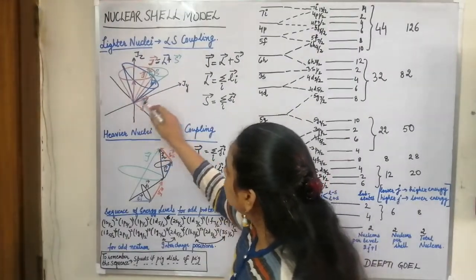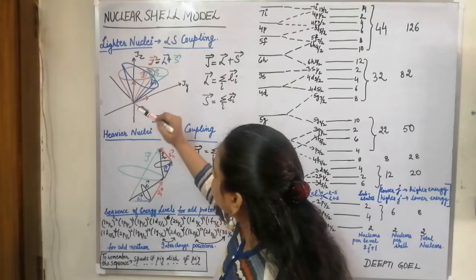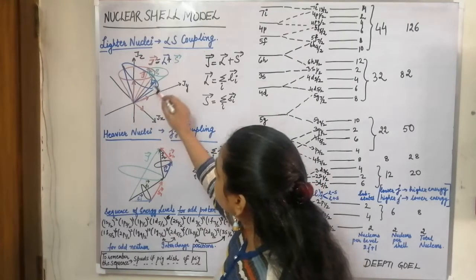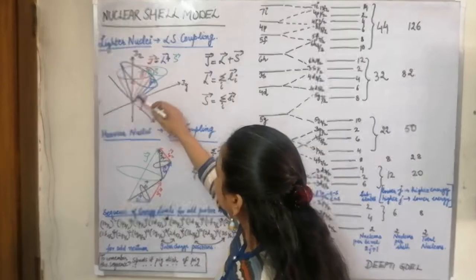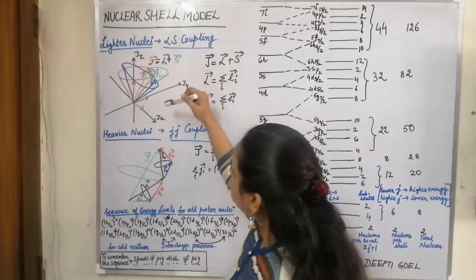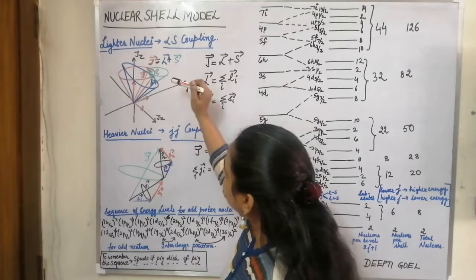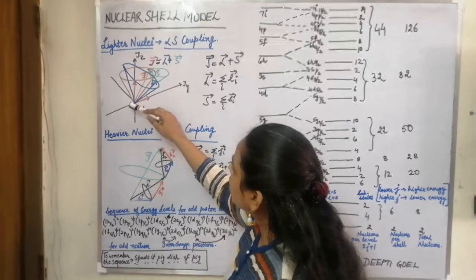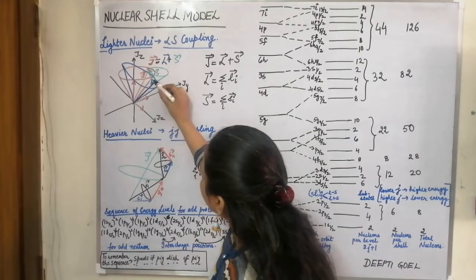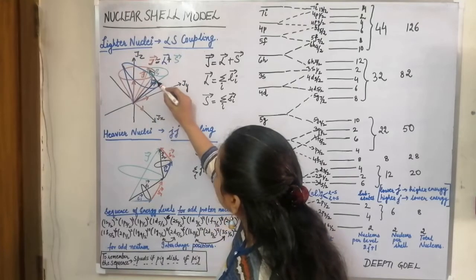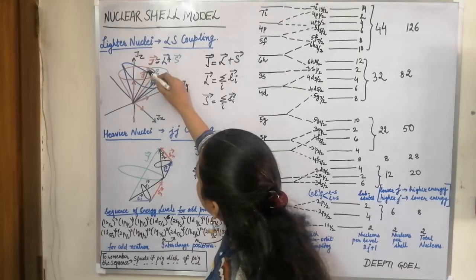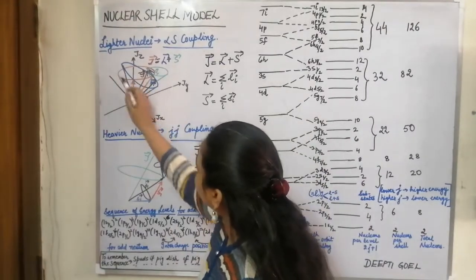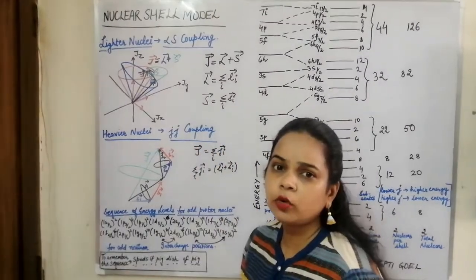Diagrammatically, the blue vector represents the total orbital angular momentum L of all nucleons, which precesses about the L axis. All nucleons spin about their own axes, represented by the S vector, which precesses about L. According to the vector triangle law of addition, L plus S gives the total angular momentum J vector, shown in red, which precesses about its own orbit.